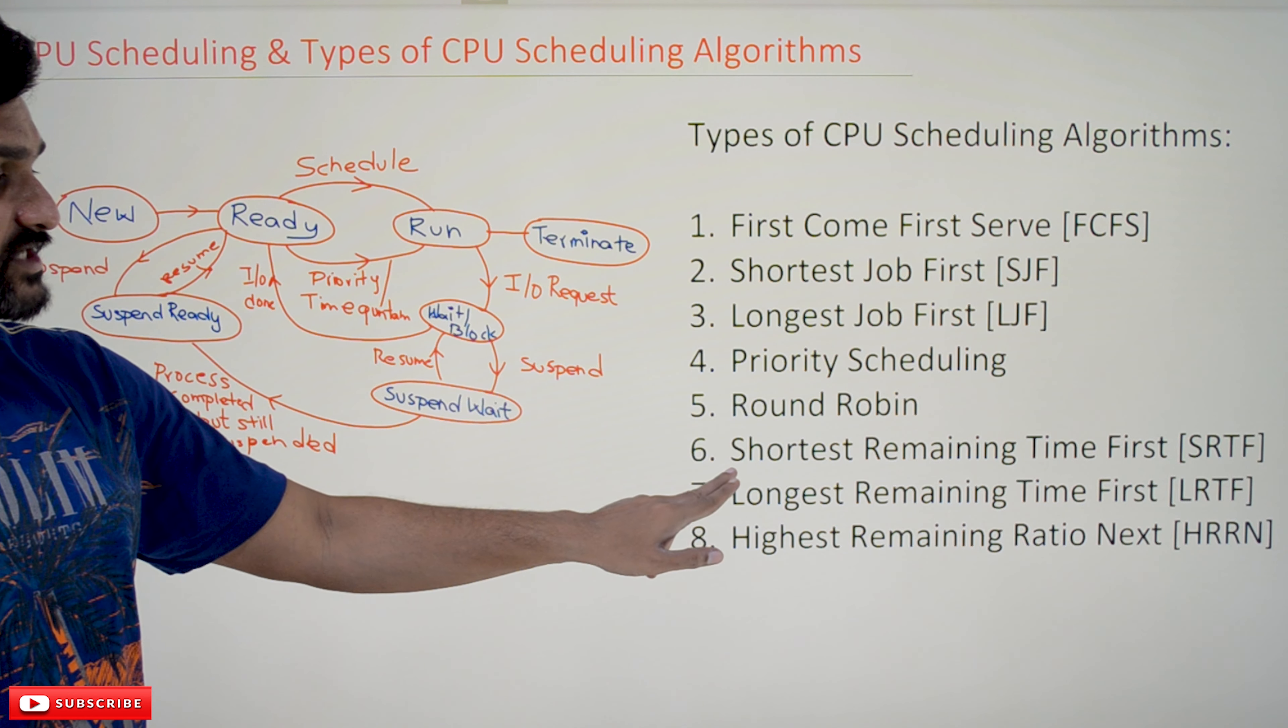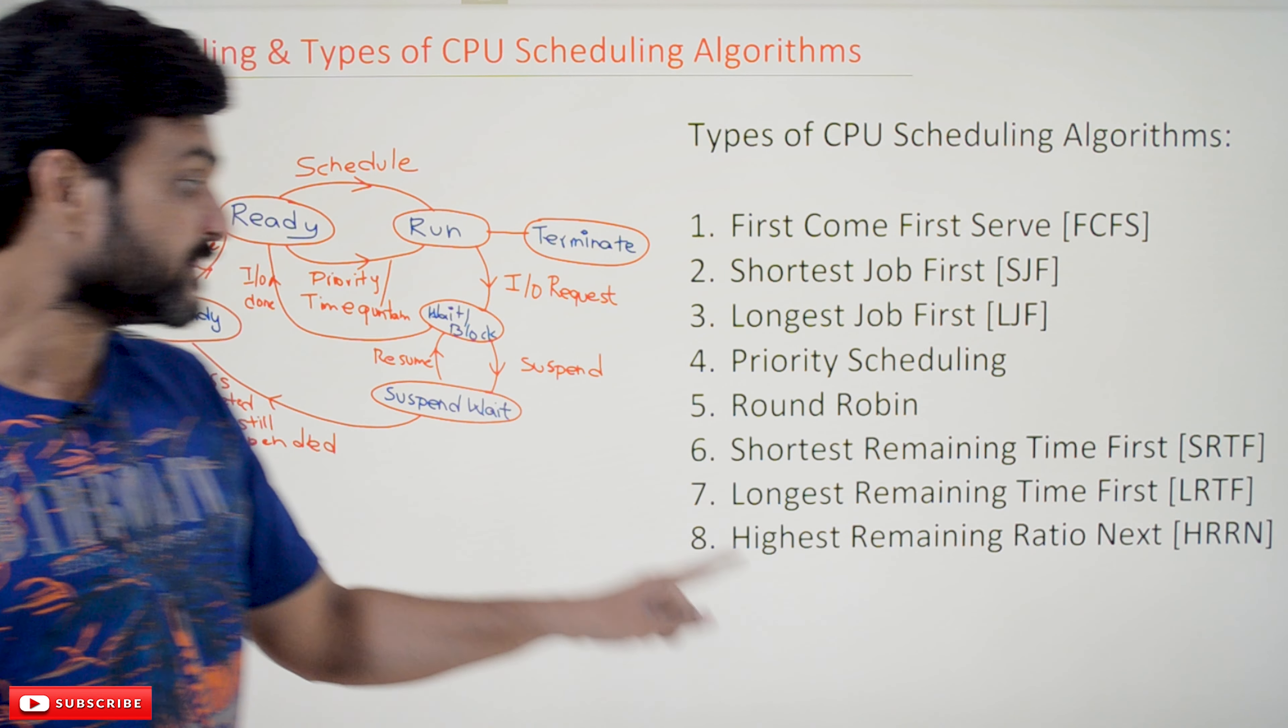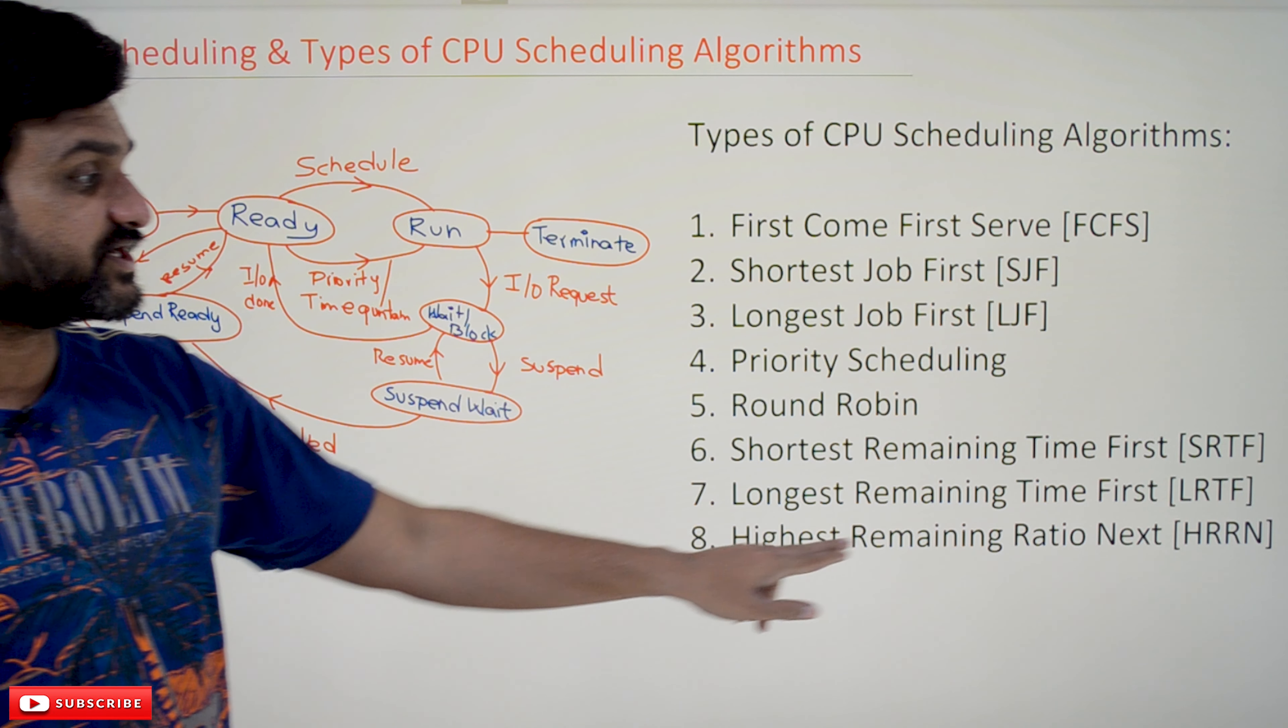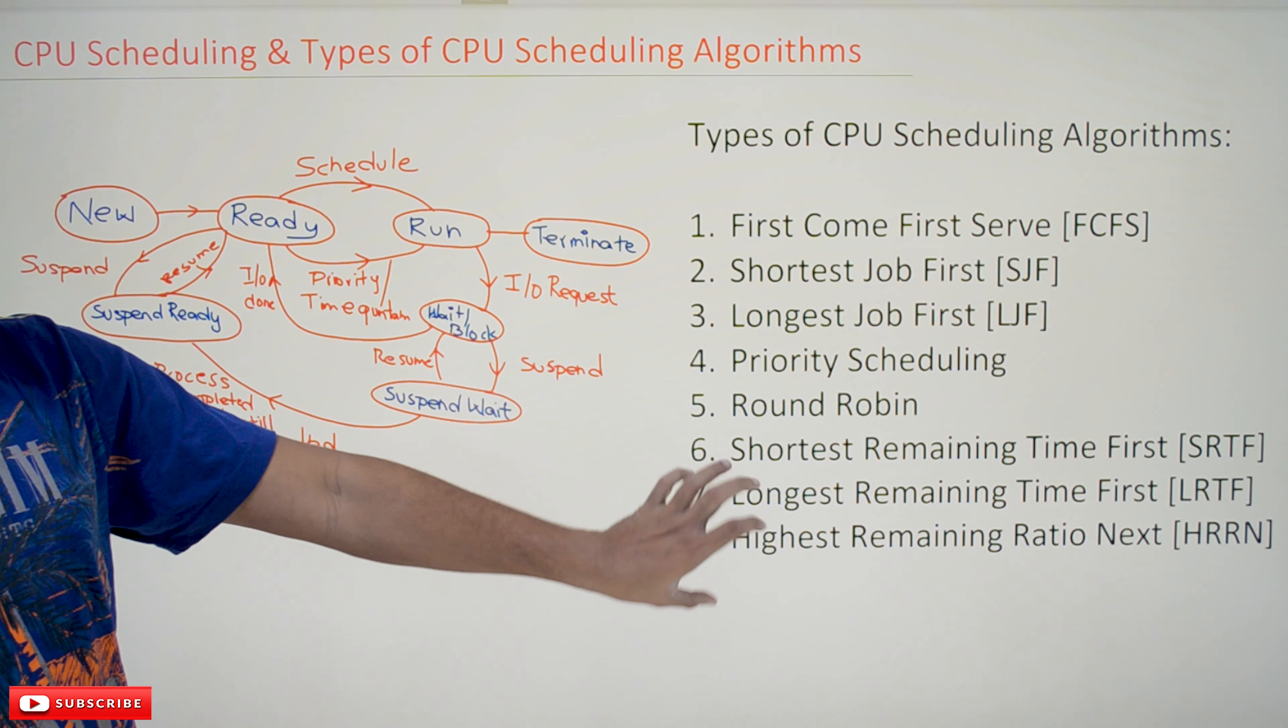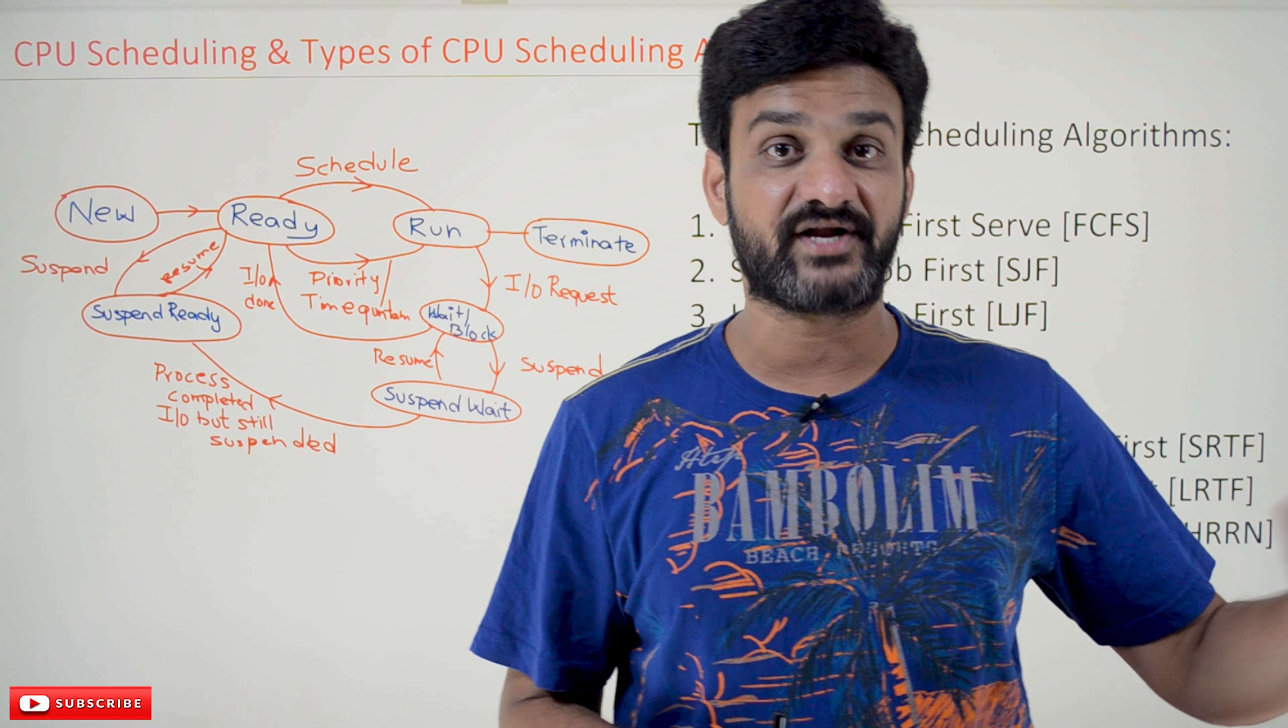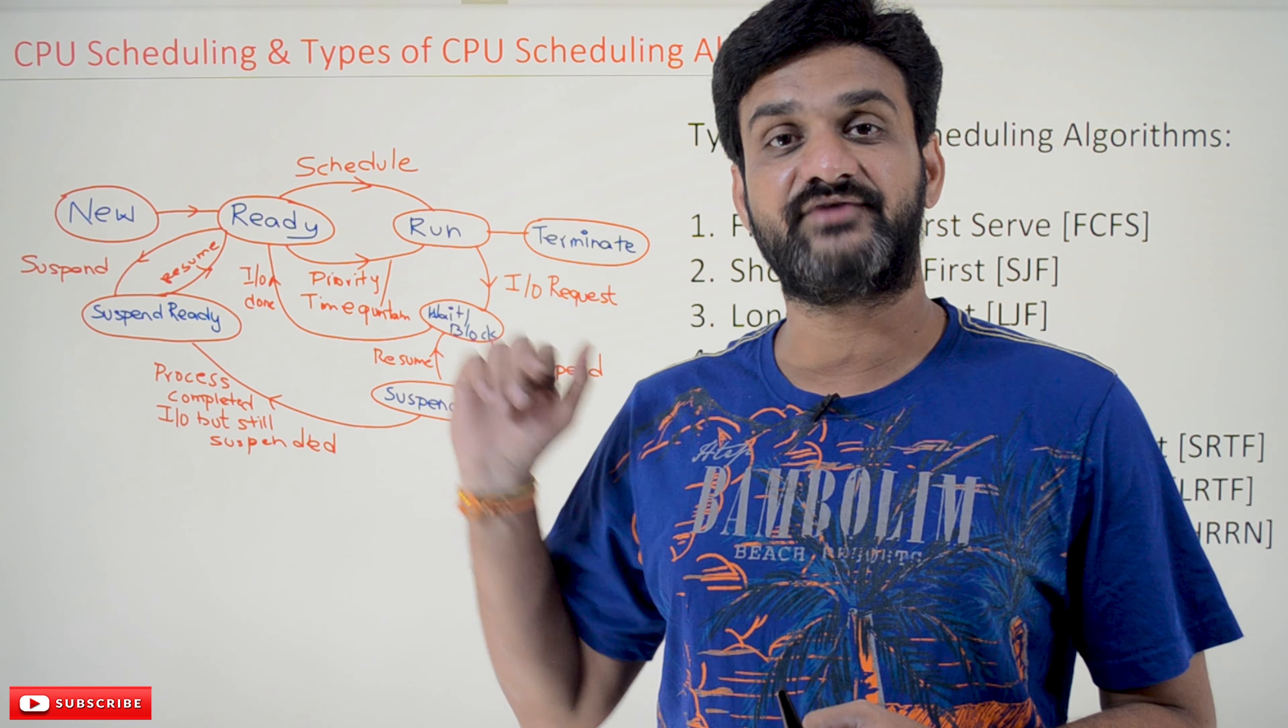The next one is Shortest Remaining Time First (SRTF), Longest Remaining Time First (LRTF), and Highest Remaining Ratio Next (HRRN). These are the eight different types of CPU scheduling algorithms. A detailed explanation about each algorithm will be covered in our next classes. This is all about CPU scheduling and the different types of scheduling algorithms.